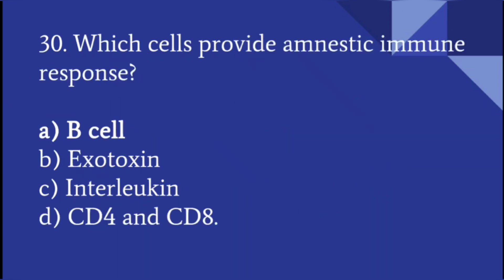B cells provide the anamnestic immune response. The anamnestic response refers to the period after infection during which, after an inductive phase where bacteria is seen in the blood, there is a period where antibodies related to that infection are not found in the body. That is called the anamnestic response.